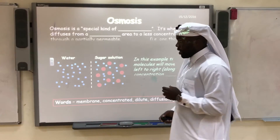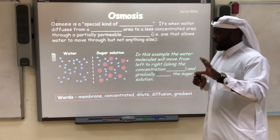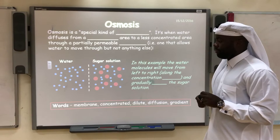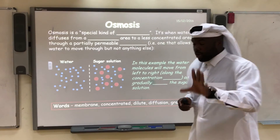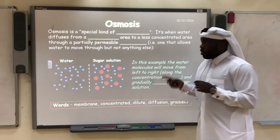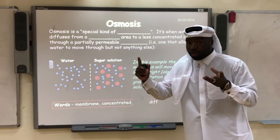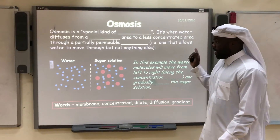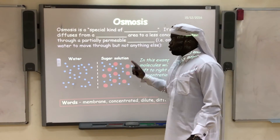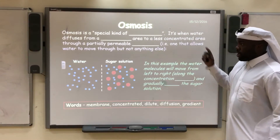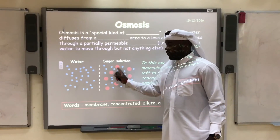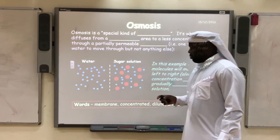What I want you to do now is pause the video and see if you can understand and fill in these words. So pause the video and go through this. Osmosis is a special kind of diffusion — it's when water diffuses from a dilute area to a concentrated area through a partially permeable membrane, i.e., one that allows water to move through but not anything else. These sugar particles cannot move — only the water molecules can move. In this example, the water molecules will move from left to right along the concentration gradient, and gradually dilute the sugar solution.